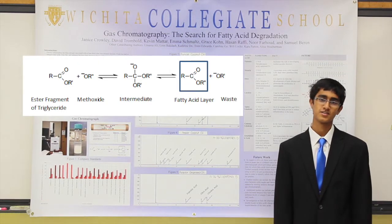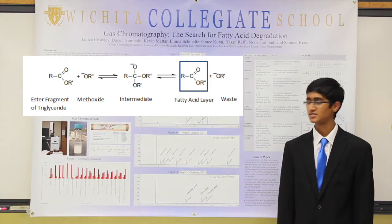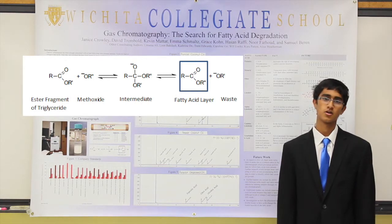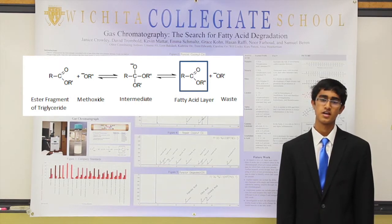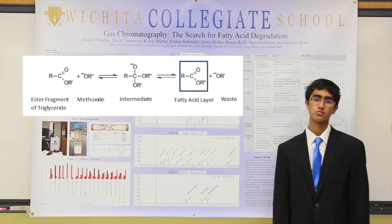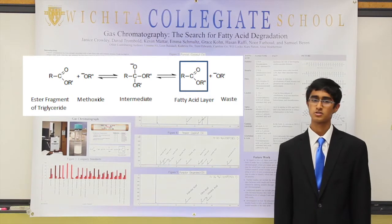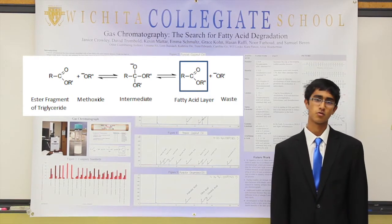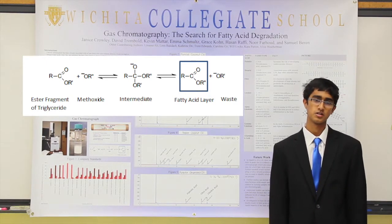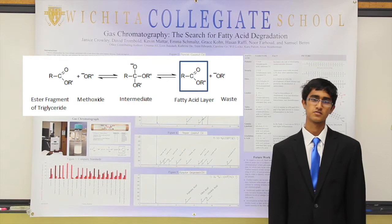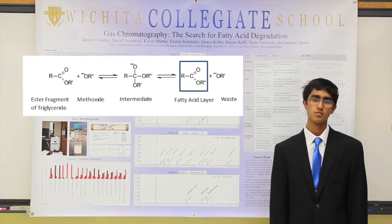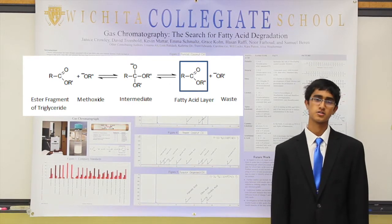On the left you can see the original esters, and then it's combined with a methoxide solution, which proceeds to form an anionic intermediate. This reaction can shift in either direction, but in an excess of alcohol it will shift towards the right.